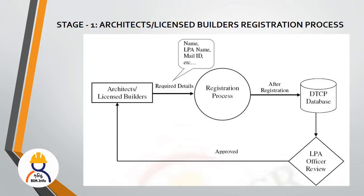In the online process, the first thing we do is: the licensed architect and licensed builder register their ID on the DTCP website and receive an ID via email. The DTCP website uploads the information to the DTCP database, and they become ID-verified local planning authority users. If there is any duplication, the application will automatically be cancelled. The registration is completed in the first stage.